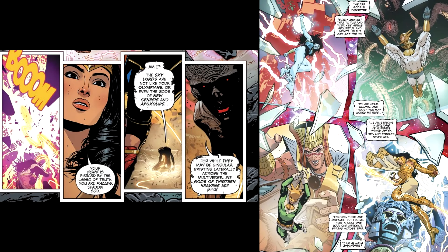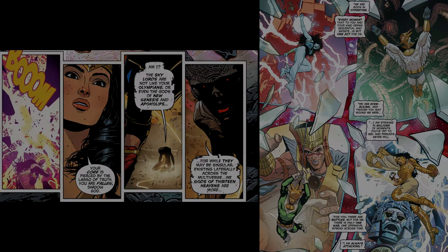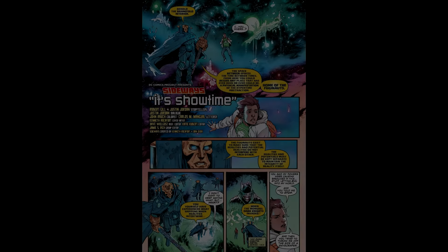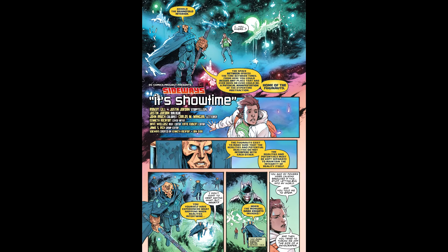All of this — all of the God Sphere — is governed by a form of time known as hypertime, which is described as being three temporal dimensions, essentially a time cube rather than a timeline. It surpasses regular time and exists throughout the God Sphere. It has a physical manifestation known as the brain fold interior, which is the space between spaces and time between times. This is where the Fugenauts manage the realities and potential realities, making sure they don't interfere with each other.